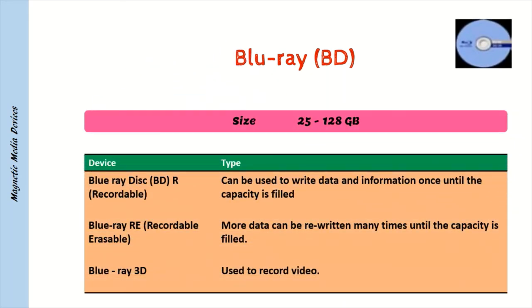Blu-ray (BD): BD-R (Recordable Blu-ray) — can be used to write data and information once until the capacity is filled. BD-RE (Recordable Erasable) — more data can be rewritten many times until the capacity is filled. Also used to record video in Blu-ray 3D.